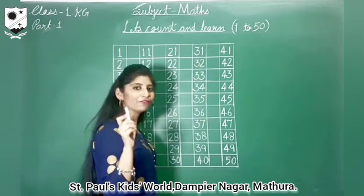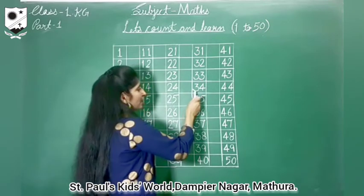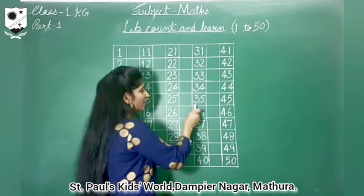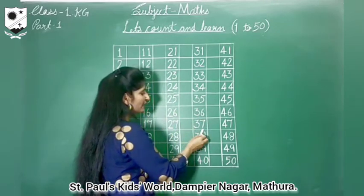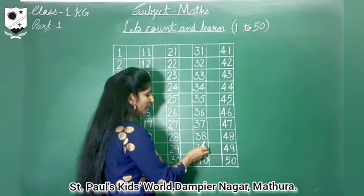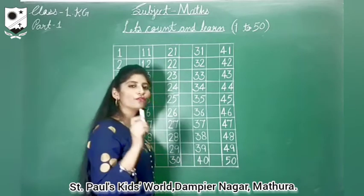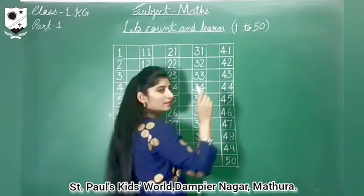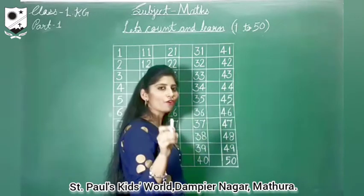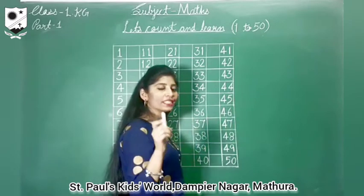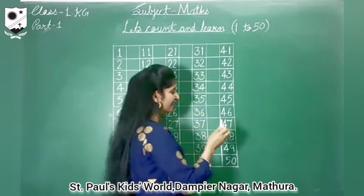Let's roll it. 31, 32, 33, 34. 3-5, 35. 3-6, 36. 3-7, 37. 3-8, 38. 3-9, 39. 4-0, 40. 4-1, 41. 4-2, 42. 4-3, 43. 4-4, 44. 4-5, 45. 4-6, 46.